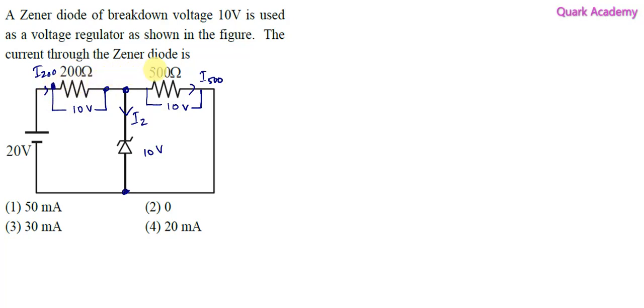Now we know the potential difference across each and every component, and we specified the currents also. So using these potential differences, let's try to figure out the currents. First, I'll find the current passing through 500 ohm, that is I500. This we can find using the expression V by R based on Ohm's law.